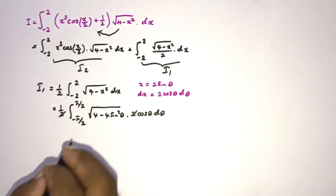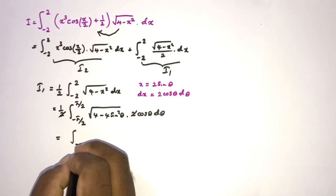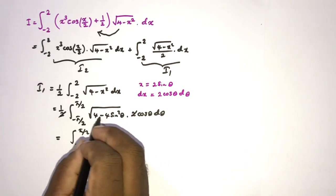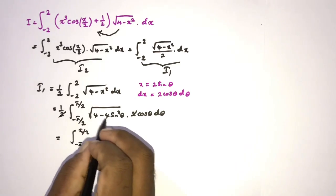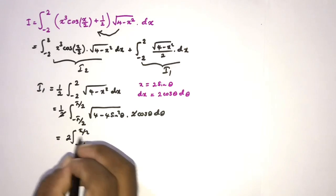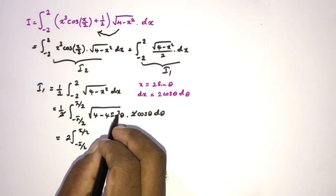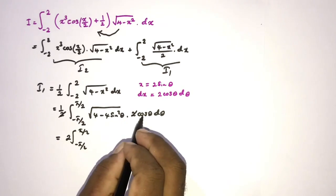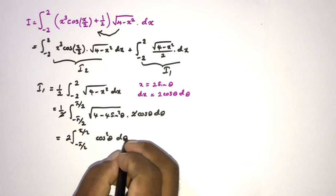We factor out the 4 from the square root — 4 is a constant factor. The square root of 4 times 1 minus sine squared theta gives 2 cosine of theta. Combined with dx equals 2 cosine theta d theta, the two 2s cancel, leaving us with an integral of cosine squared of theta d theta from minus pi over 2 to pi over 2.